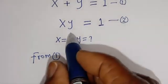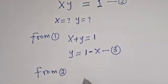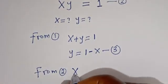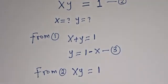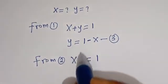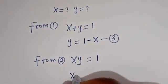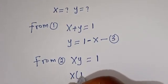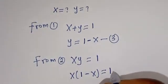And from equation 2, X times Y is equal to 1. Then let's substitute for Y. We have X bracket 1 minus X is equal to 1.